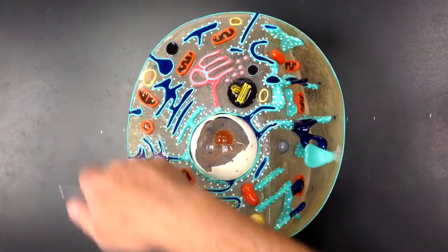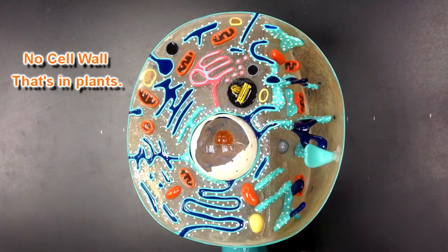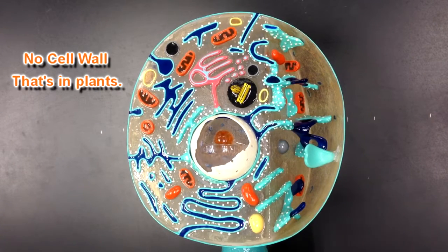Notice that we do not have a cell wall. Cell walls are found in plant cells, not animals.